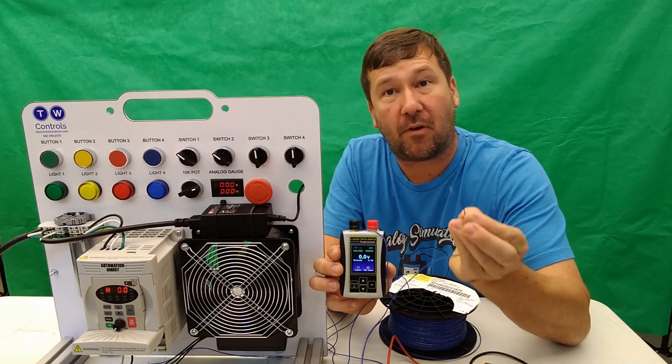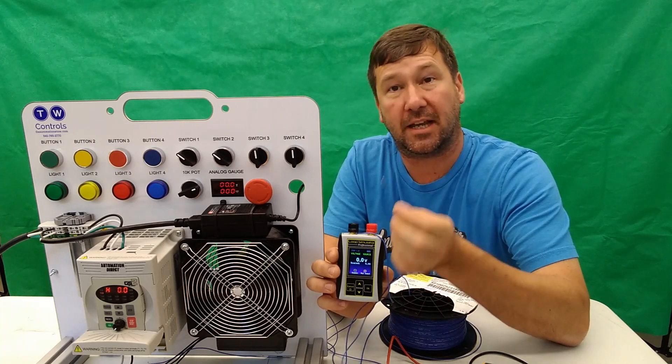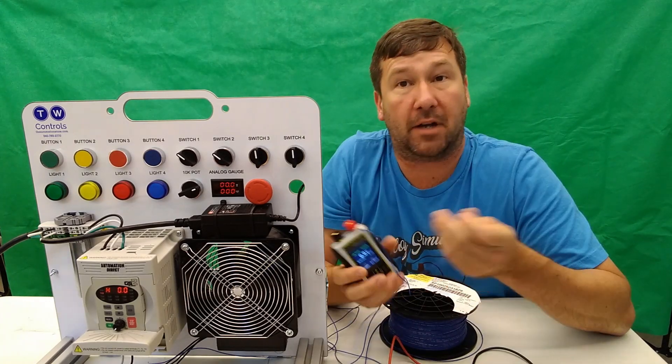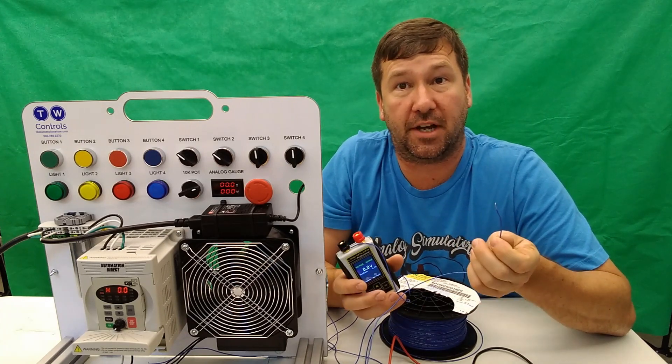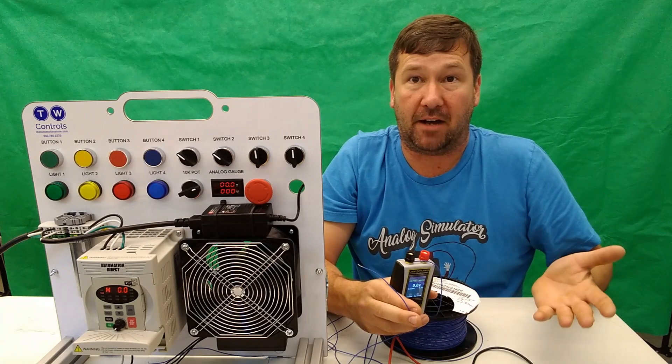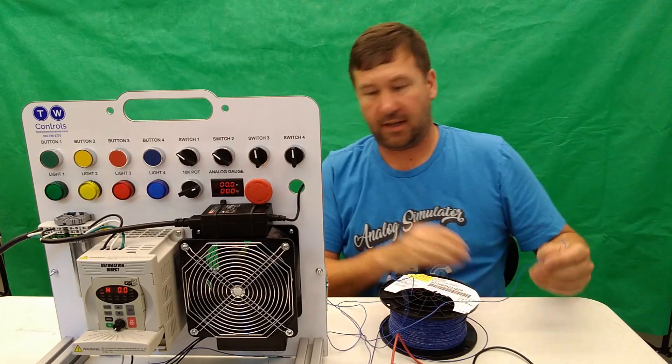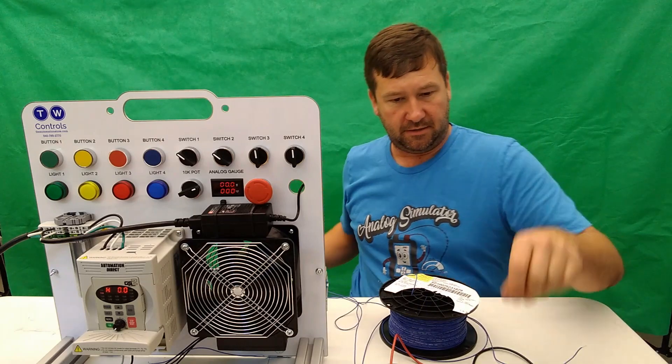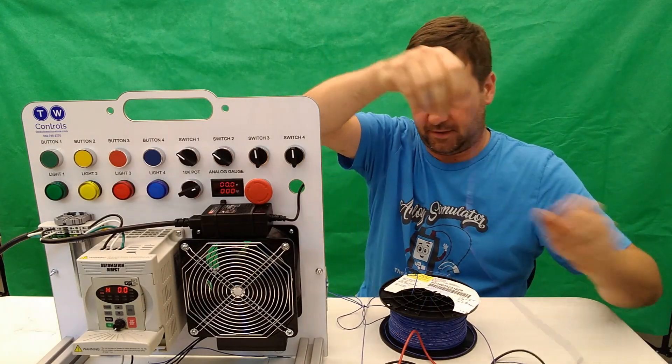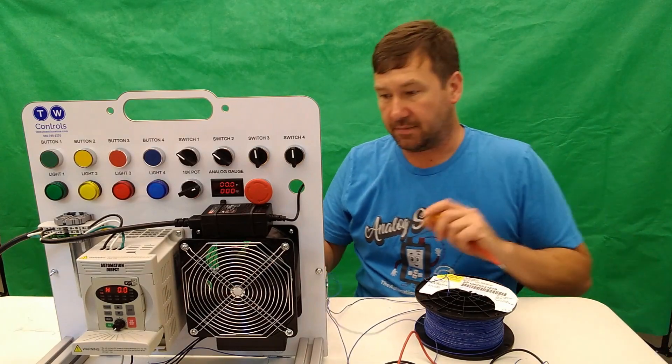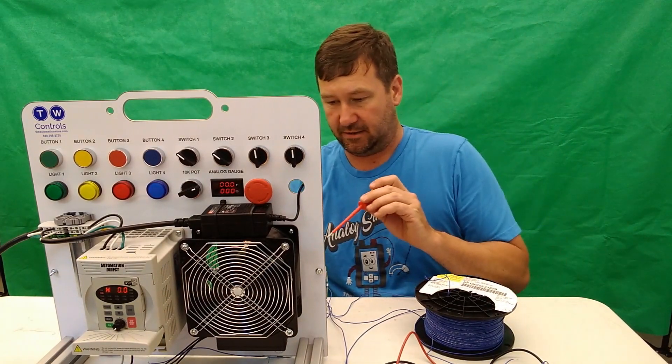But it is a four to 20 milliamp signal. That means it has what they call a live zero. That way if a wire is loose, it'll show zero milliamp when we know then that we have a malfunction in the circuit. Now let's just show how this is going to work with this milliamp signal. So if you'll give me just a second, I'm going to modify our signal to accept a milliamp instead of a voltage signal.